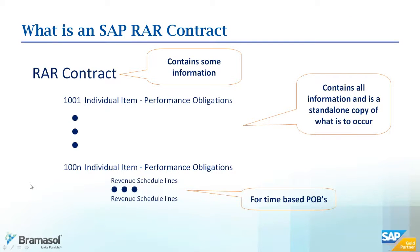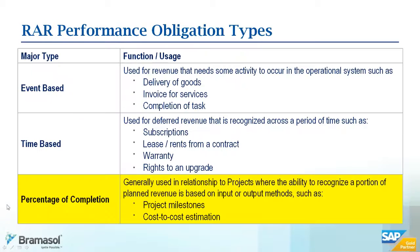We want to focus on the project systems folks. Of the three performance obligation types implemented in RAR, we're focused on percentage of completion. But we'll look at the blend of when you bring in event-based from a project system perspective, especially because we're seeing many cases where projects include customer materials. Folks have been struggling out there finding various ways — different channels where they deliver materials, charge the customer for that as a revenue stream, while still doing the project. RAR helps you to easily blend and meet compliance with the regulations in this scenario.